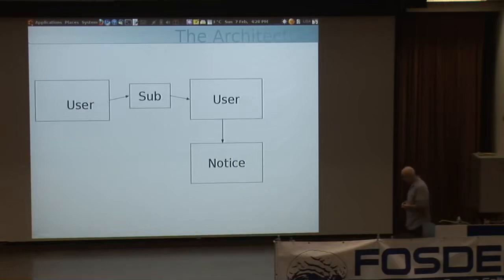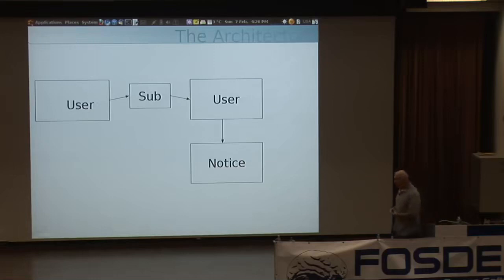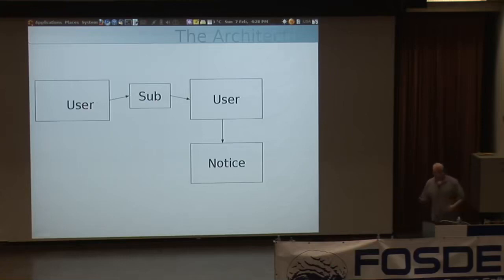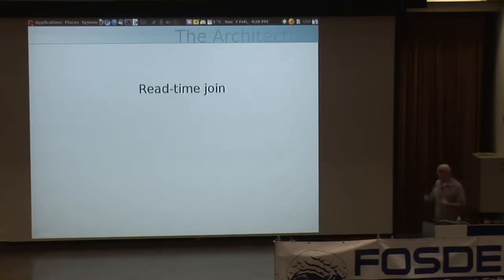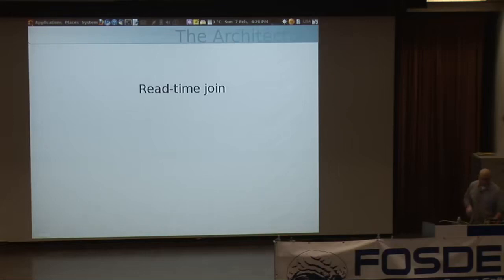What is this inbox data structure? You have a user who might be subscribed to another user who posts a notice. The way I originally spiked this out was with a JOIN — asking what are the most recent notices posted by someone you're subscribed to. That turned out to be incredibly inefficient — a three-way join across three tables — really bad performance.